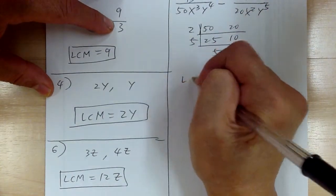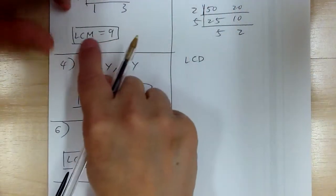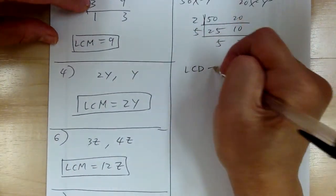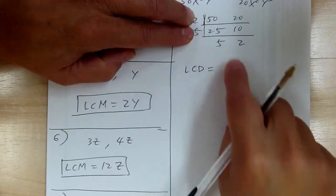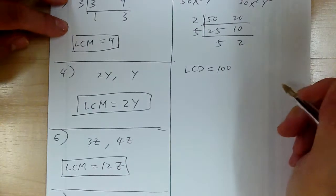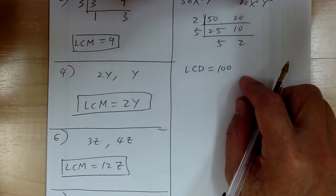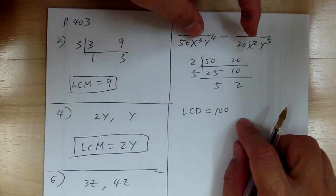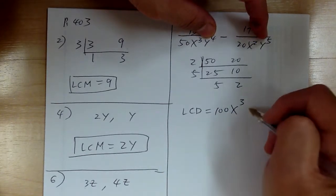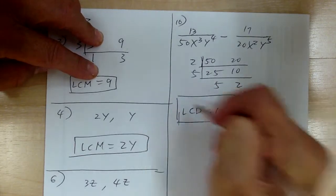So your LCD — now because it's the denominator, that's why it's called LCD. You're going to multiply everything together: 10 times 10 gives you 100. That takes care of the number. Now go to the alphabet: you've got x squared and x cubed, so it would be x cubed — you take the higher one. You've got y to the 4 and y to the 5, so you take y to the 5. And that's your LCD.